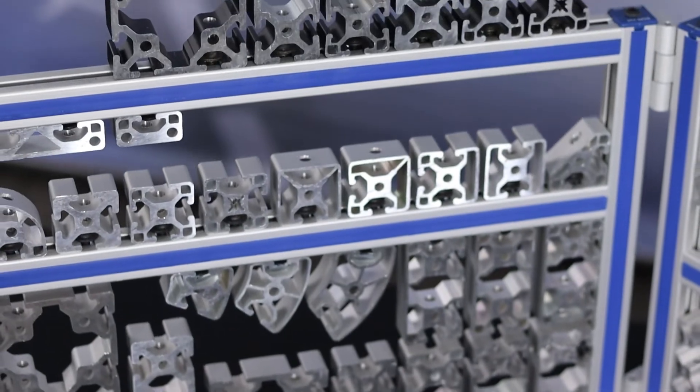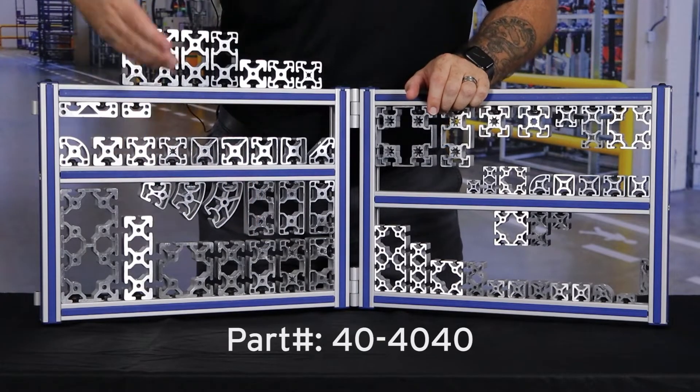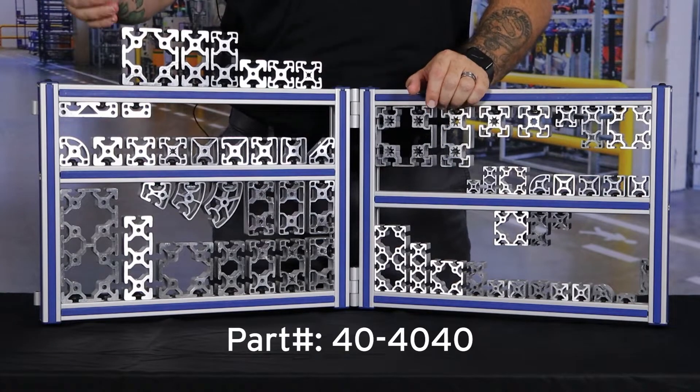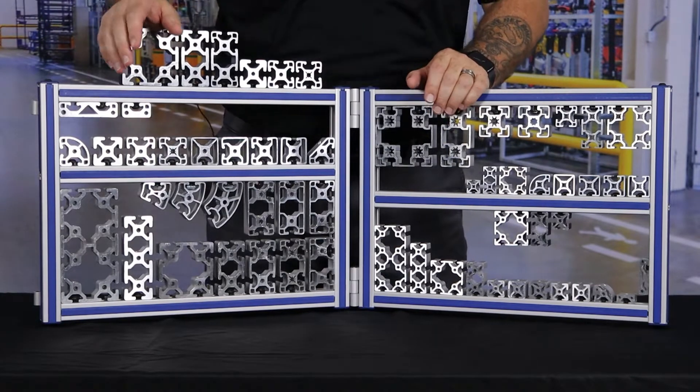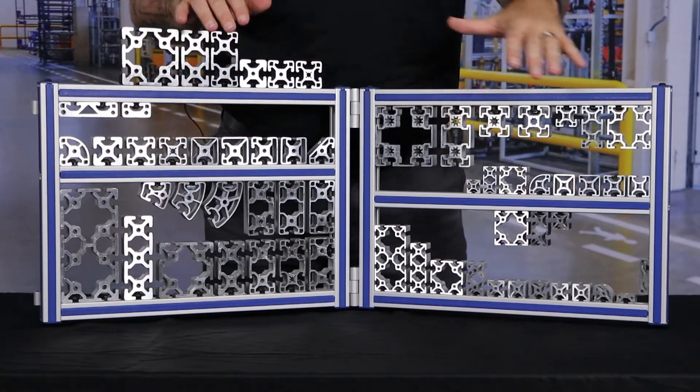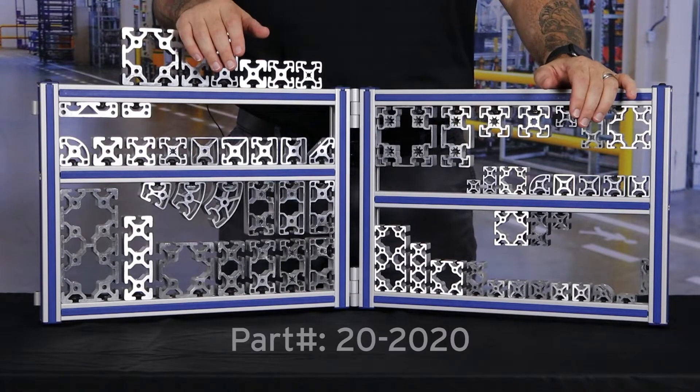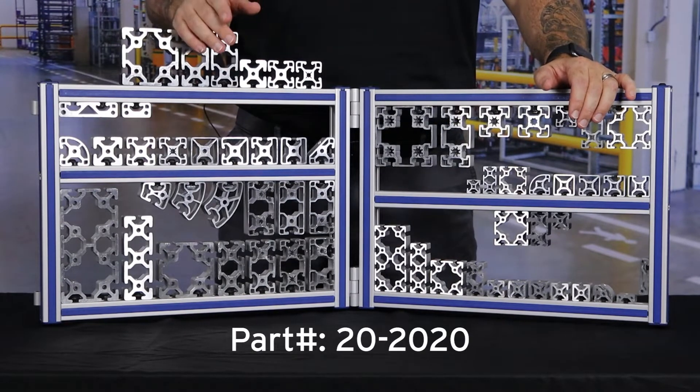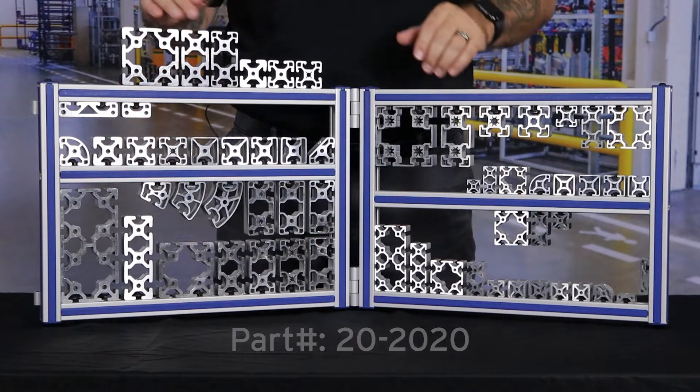So here would be a 40 millimeter by 80 millimeter. So the part number would be a 40 for the series dash 4040, or a 40 dash 4080, and so on and so forth as your parts get bigger. The same rule kind of applies to all of the other metric series. So a 20 would be a 20 dash 2020 to give you a 20 millimeter by a 20 millimeter bar, so on and so forth.